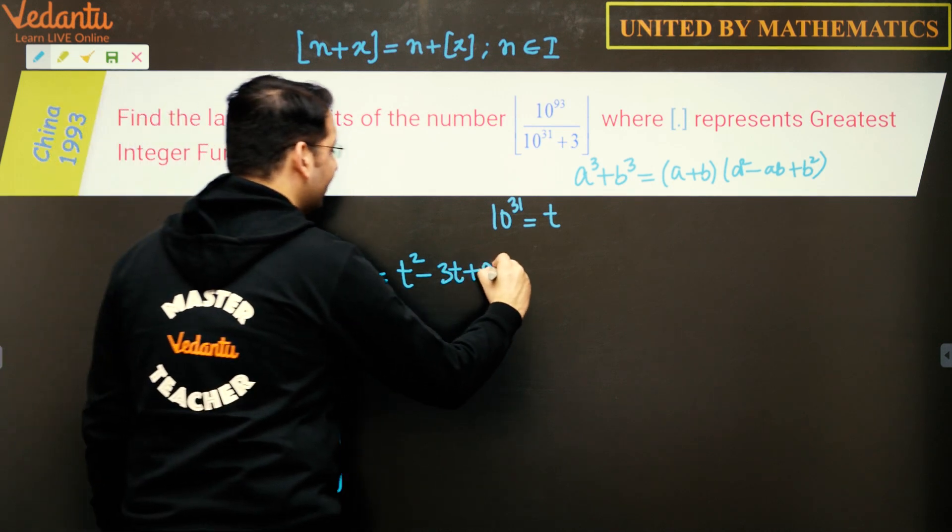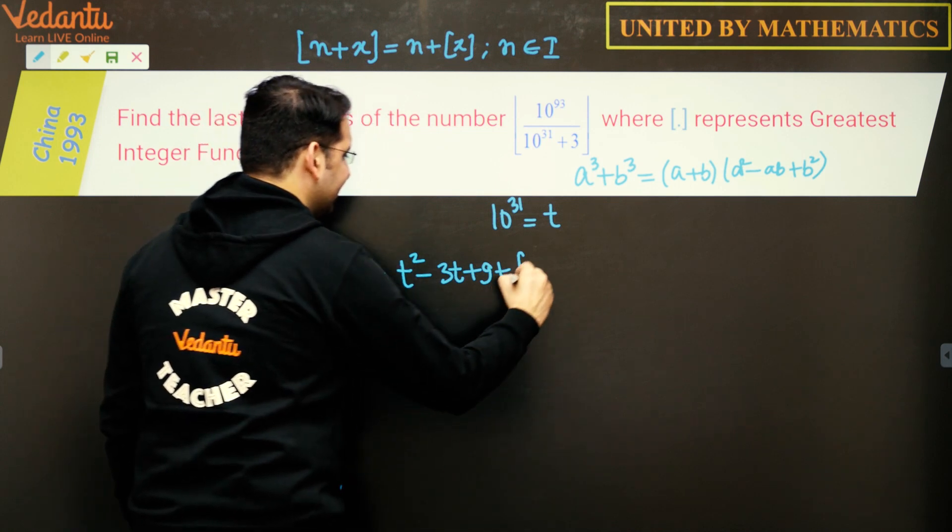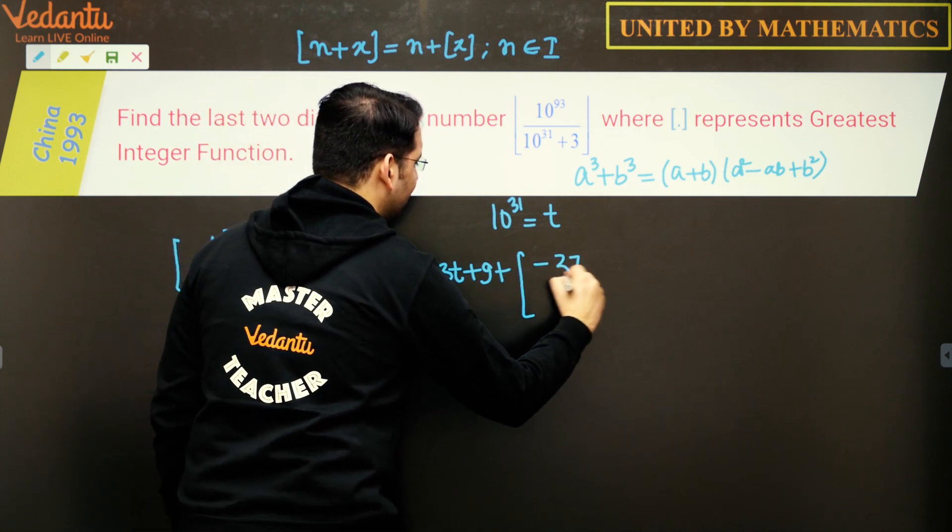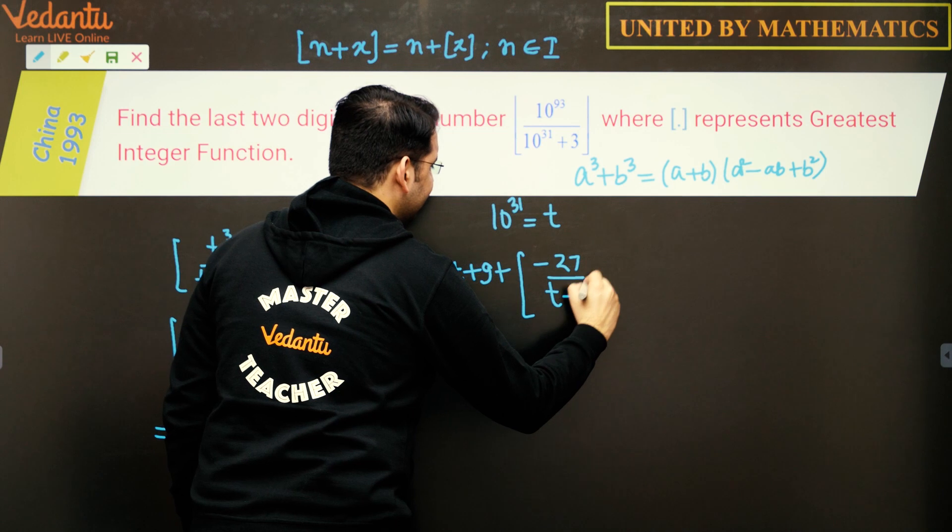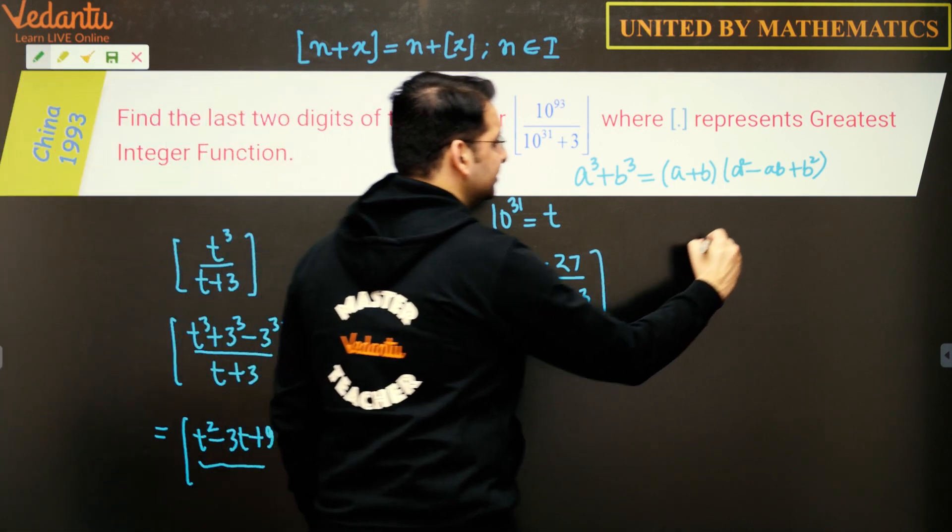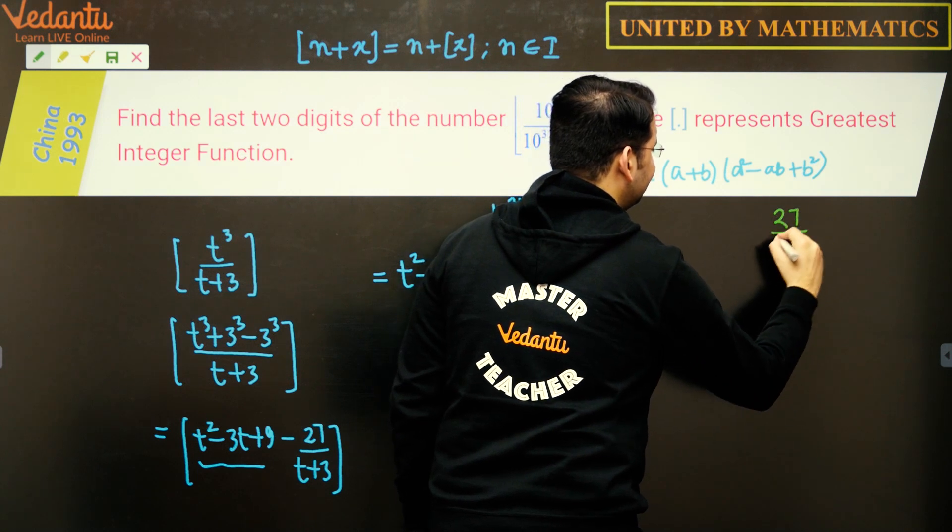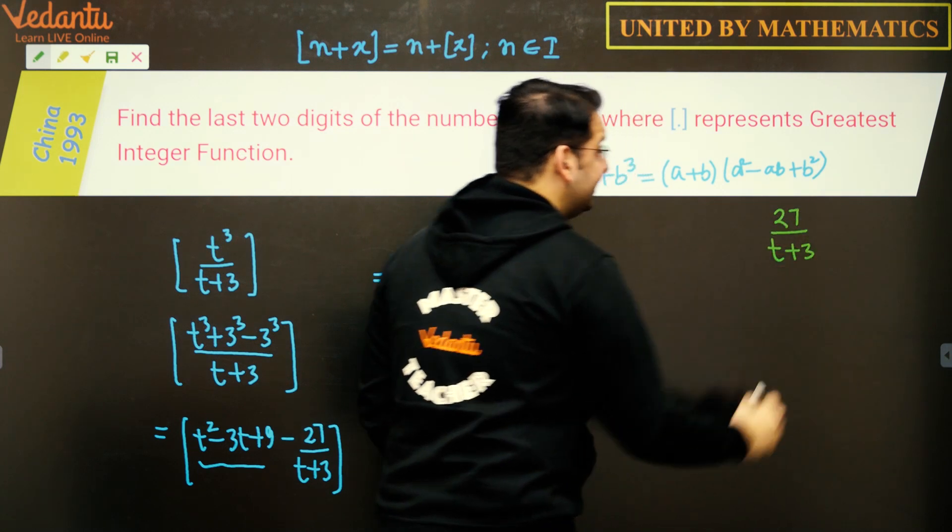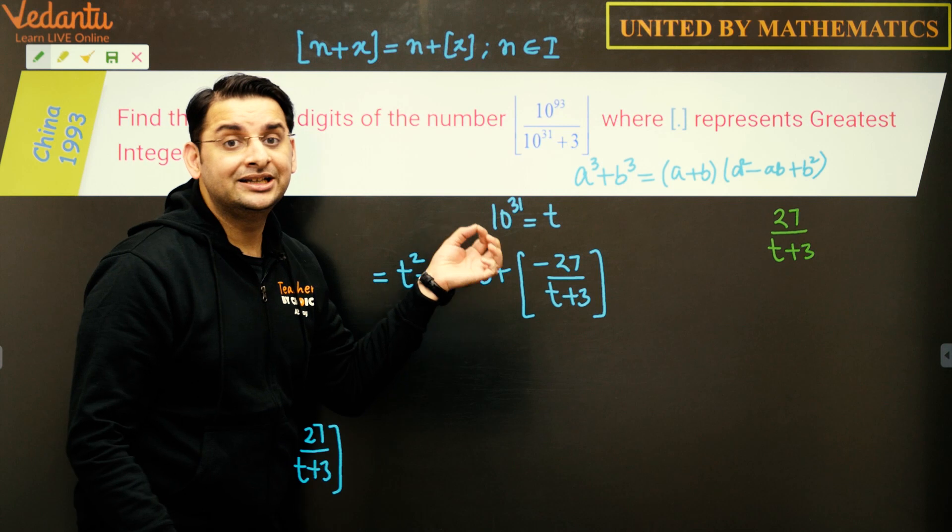What we'll be left with is plus greatest integer of minus 27 upon t plus 3. If we look at this expression, 27 upon t plus 3, where t is a number 10 to the power 31 which is a huge number as compared to 27.